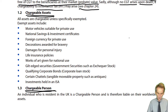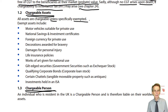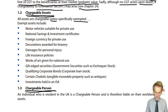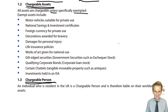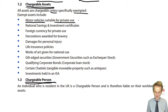Moving on to chargeable assets — a very simple definition: all assets are chargeable unless they are specifically exempted. There are a number of exempt assets. First and most common: motor vehicles suitable for private use — basically motor cars. These are exempt assets.